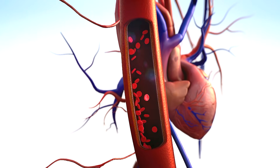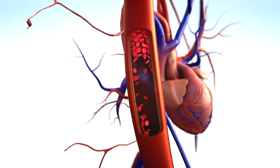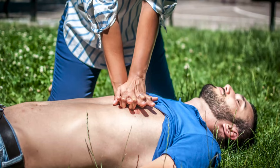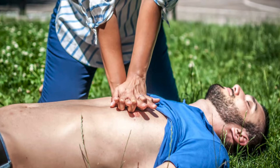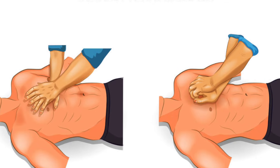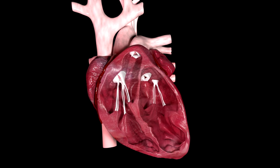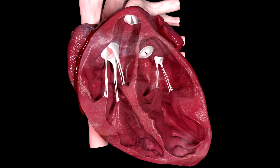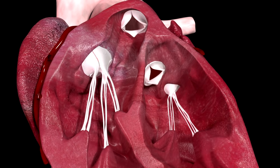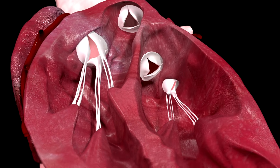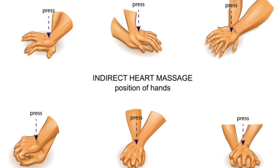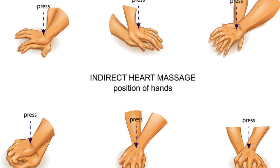Cardiopulmonary resuscitation serves one critical purpose: maintaining blood circulation and oxygen delivery when the heart fails. Whether it's cardiac arrest, heart attack complications, drowning incidents, or severe choking, CPR bridges the gap until emergency medical teams arrive. Without intervention, vital organs — especially the brain — begin deteriorating rapidly.